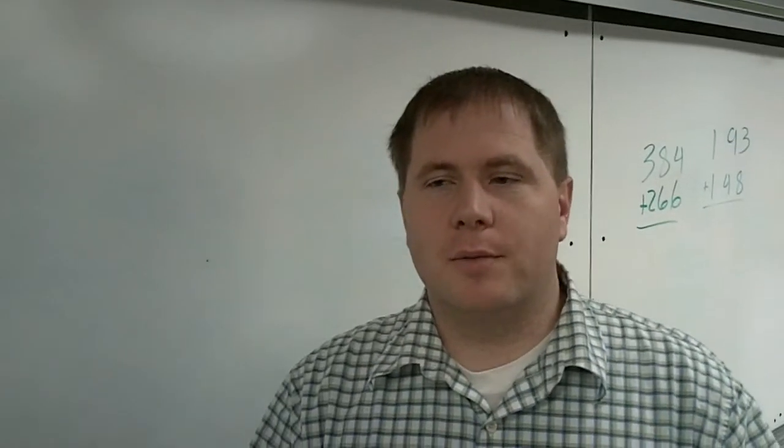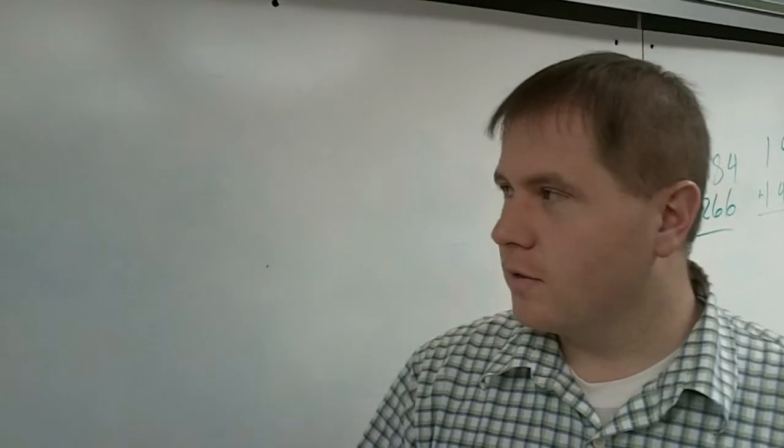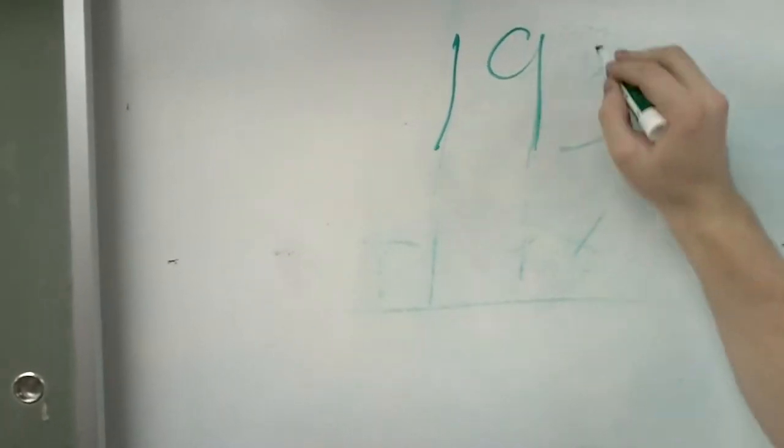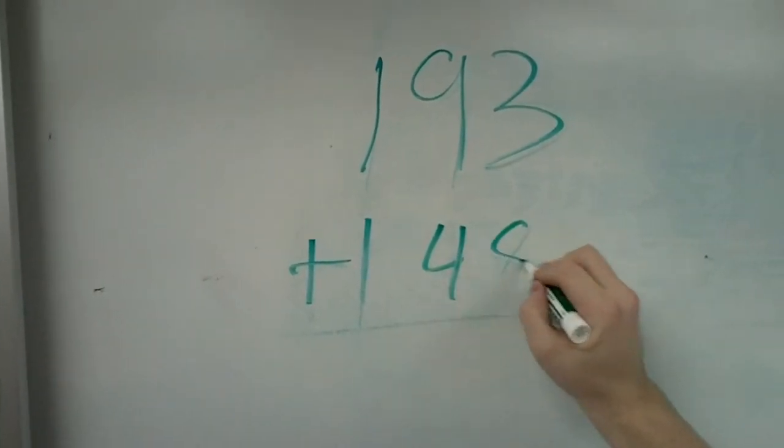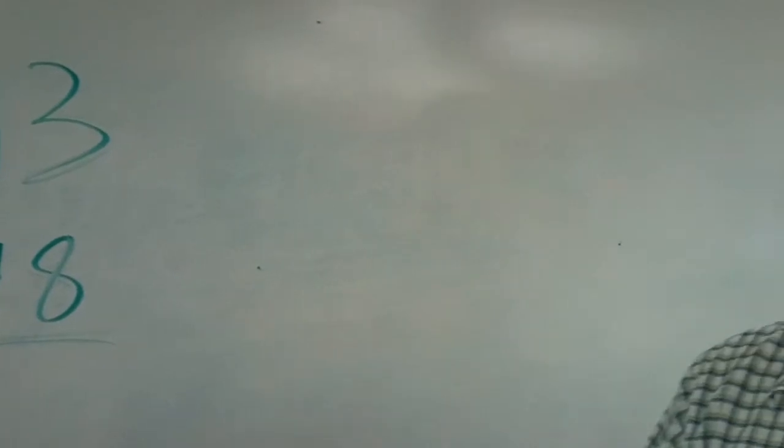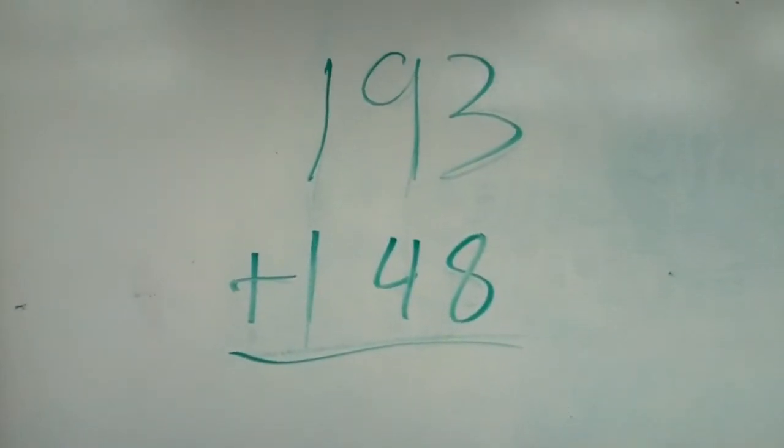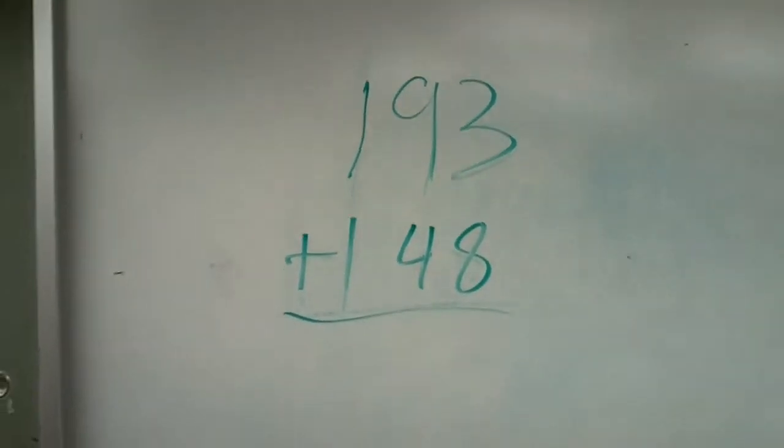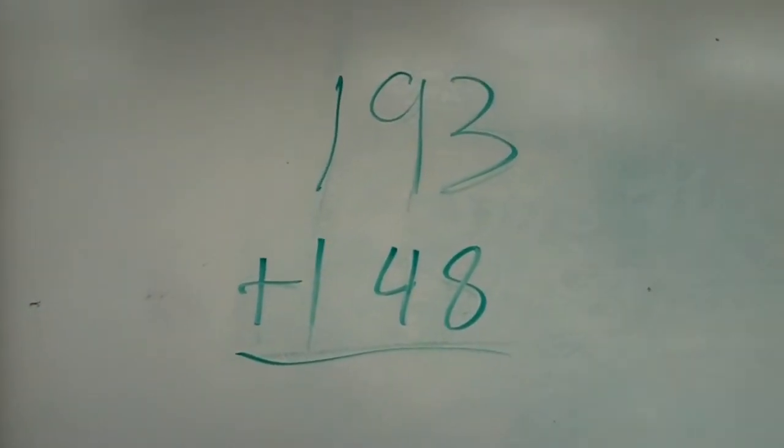All right, so now we're going to give you an opportunity to practice what we just went over, and the problem that we want you to do is 193 plus 148. So you're going to write this out in expanded form and then use the idea we just taught you of regrouping what really is happening with the tens and the hundreds. This is combining the two ideas. Okay, so at this time the teacher can pause the tape and walk around and check your work as you do this problem.